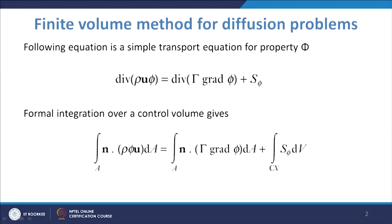Going to the finite volume method for convection as well as diffusion problems — it is not about diffusion problems only, but about convection as well as diffusion problems. The governing equation will be div(ρuφ) = div(τ∇φ) + Sφ. This is the convection term and this is about the diffusion term, and then you have the source term. When you integrate this equation formally over the control volume,